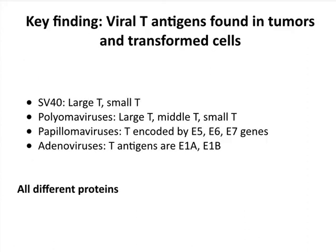The T antigen we talked about earlier for SV40 replication was discovered because the protein is expressed in tumors. In SV40 we have large T and small T; polyomas have large, middle, and small; papillomaviruses have E5, E6, and E7; adenovirus encodes them in E1A and E1B. The important thing is that they're expressed in tumors and transformed cells, and every one of these proteins is different — there's no homology between SV40 T, polyoma, papilloma, and adeno. This was an important discovery, but people really didn't understand what it meant.